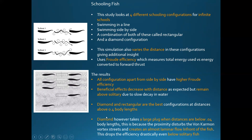But below 0.4 body lengths, the diamond configuration takes a huge plunge in efficiency. If the fish in front are too close, their reverse von Kármán vortex streets interact and create an almost laminar flow hitting the diagonal fish — which is obviously very bad and reduces its efficiency drastically, explaining why diamond drops sharply at very tight packing.